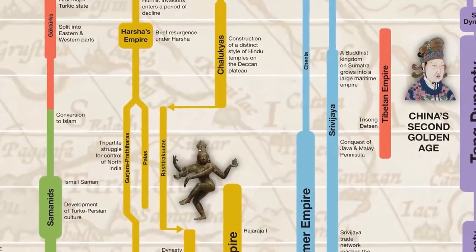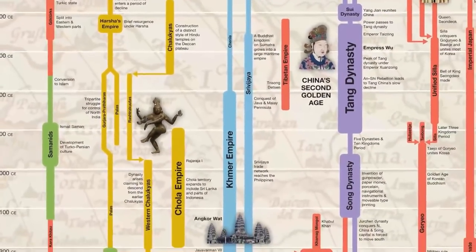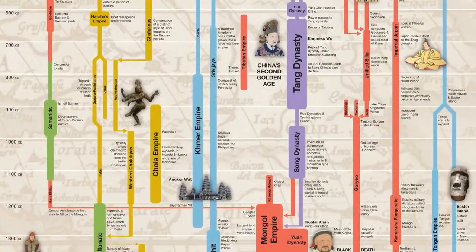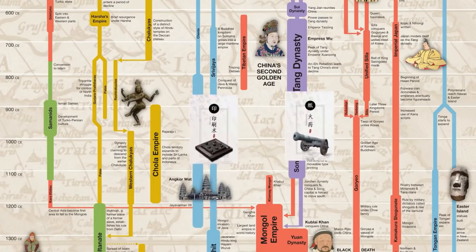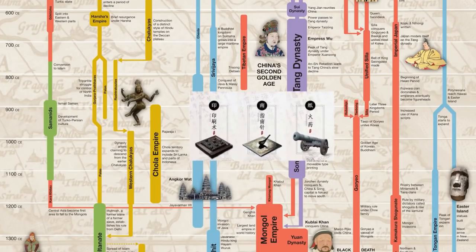Let's now take a look at what was happening across Asia in the year 1000, a century after the fall of the Tang dynasty. In China, the Tang dynasty had collapsed, and after a brief period of division called the Five Dynasties and Ten Kingdoms period, it was replaced by the Song dynasty. During the Song dynasty, gunpowder, movable type printing, and the compass were all invented. Together with paper, these are known as the Four Great Inventions.